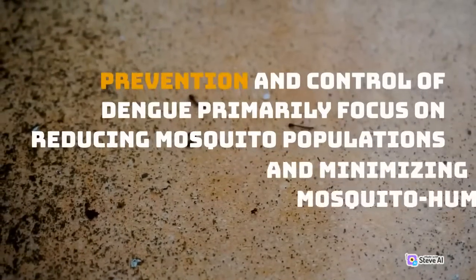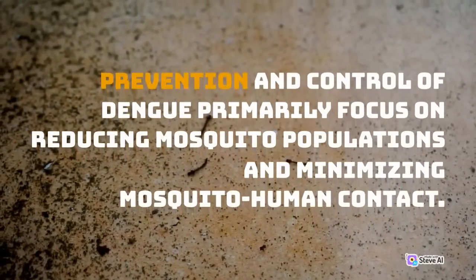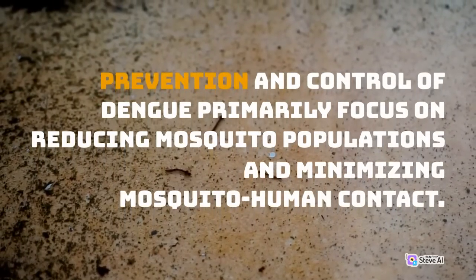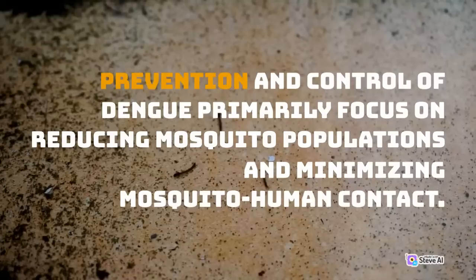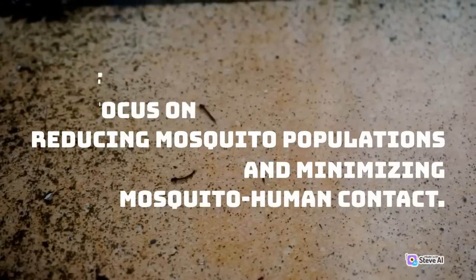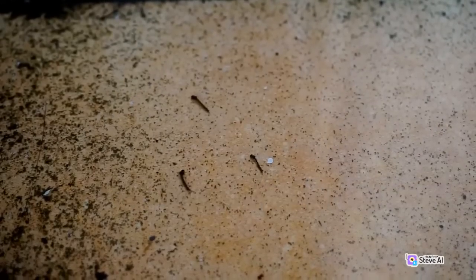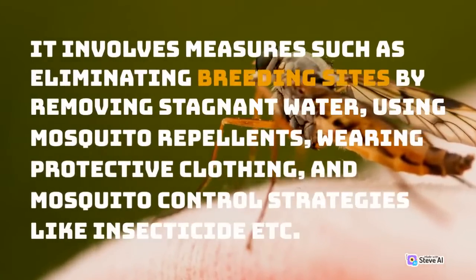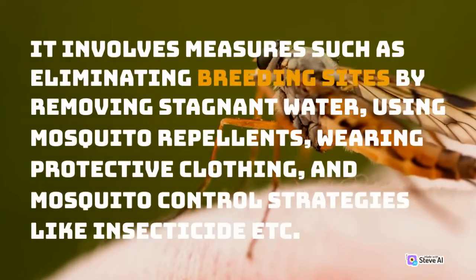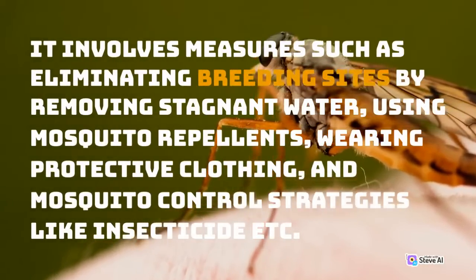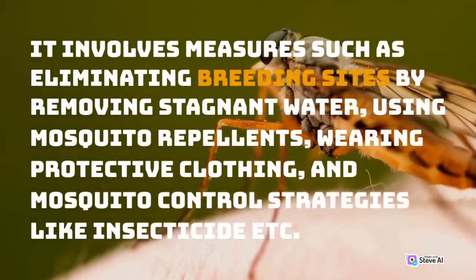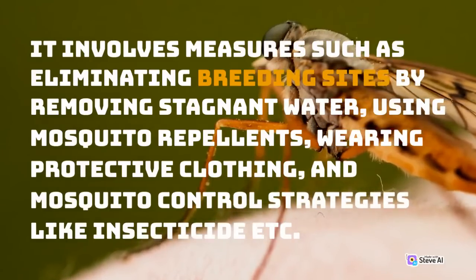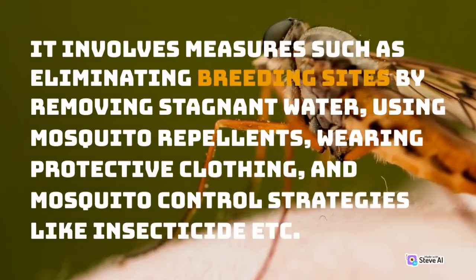Prevention and control of dengue primarily focus on reducing mosquito populations and minimizing mosquito-human contact. It involves measures such as eliminating breeding sites by removing stagnant water, using mosquito repellents, wearing protective clothing, and mosquito control strategies like insecticide.